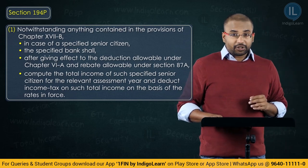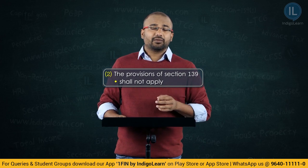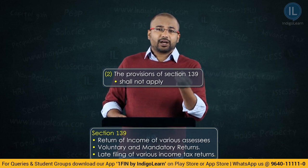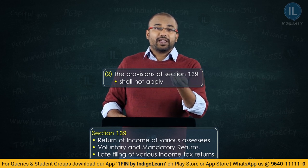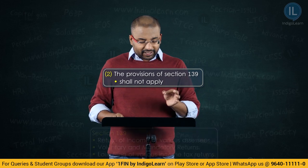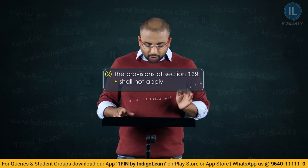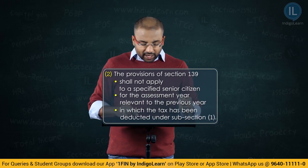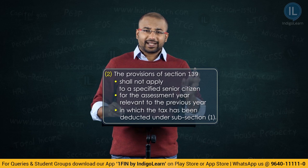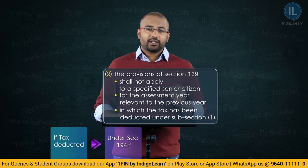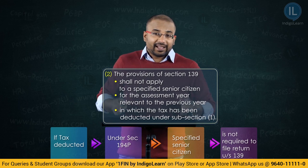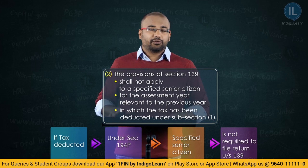Subsection 2 says the provisions of Section 139 — which simply says please file your return of income if your income has exceeded the basic exemption limit — shall not apply to a specified senior citizen for the assessment year relevant to the previous year in which tax has been deducted under subsection 1. Simply put: if tax has been deducted under Section 194P, the specified senior citizen need not file a return of income under Section 139. This is given by subsection 2 of Section 194P.